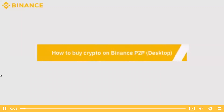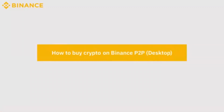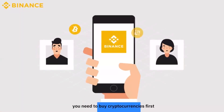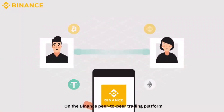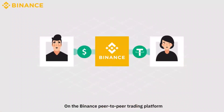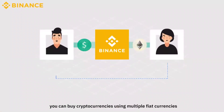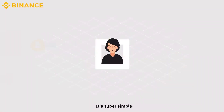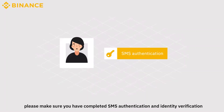How to buy cryptocurrency on Binance P2P. Before trading cryptocurrencies, you need to buy cryptocurrencies first. On the Binance peer-to-peer trading platform, you can buy cryptocurrencies using multiple fiat currencies in various payment methods. It's super simple. Before we start, please make sure you have completed SMS authentication and identity verification.